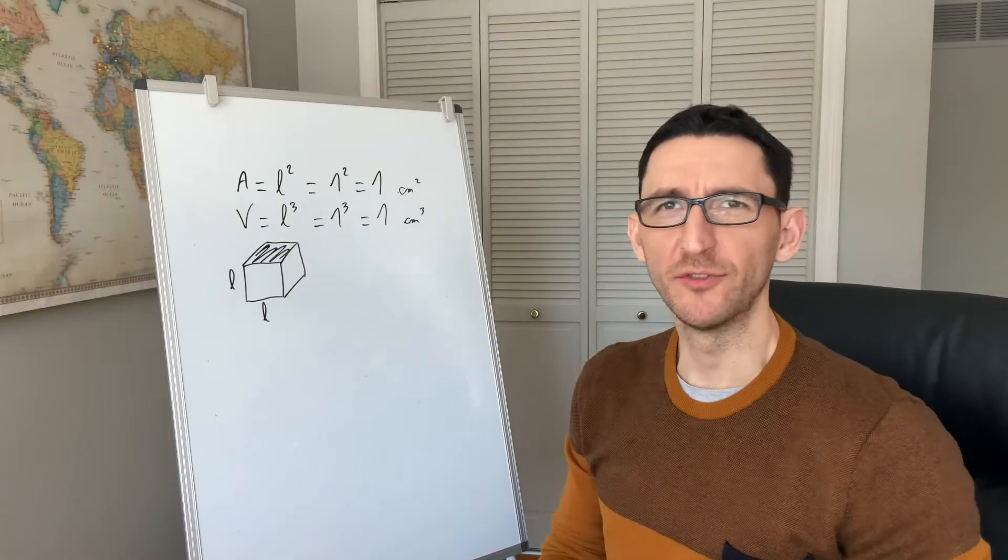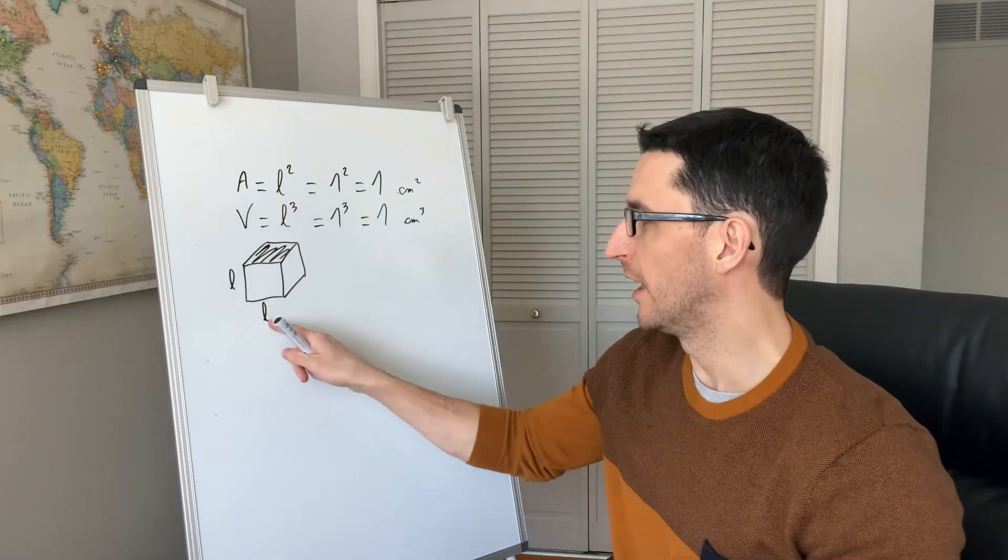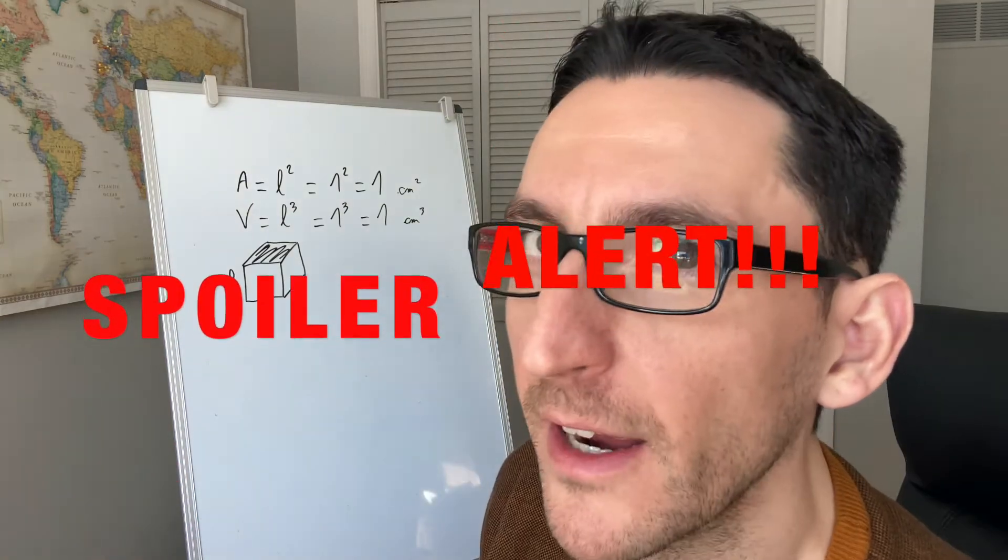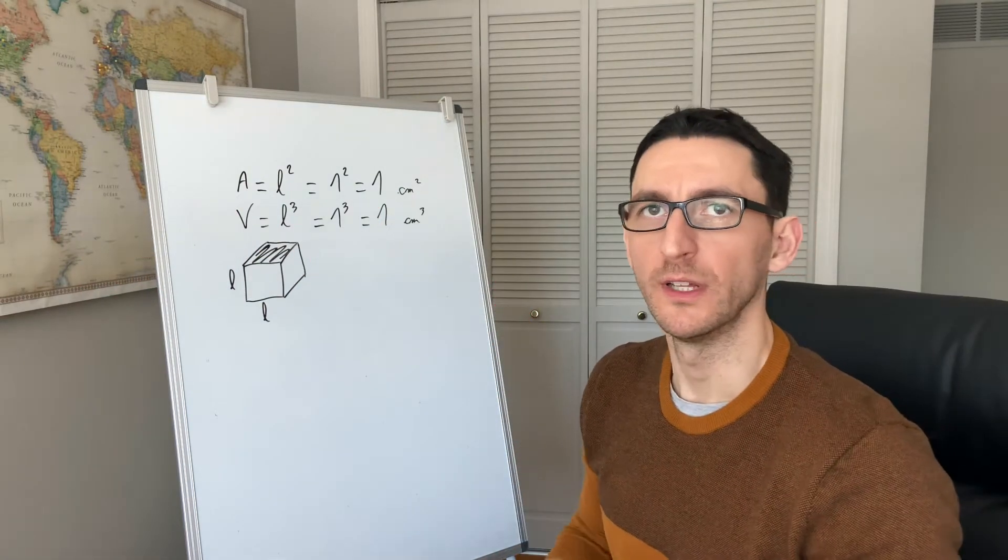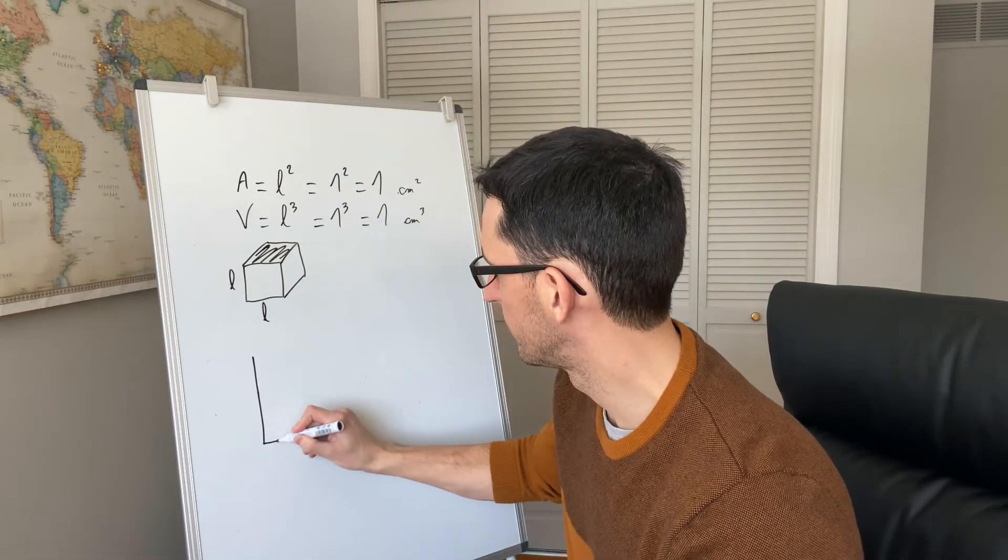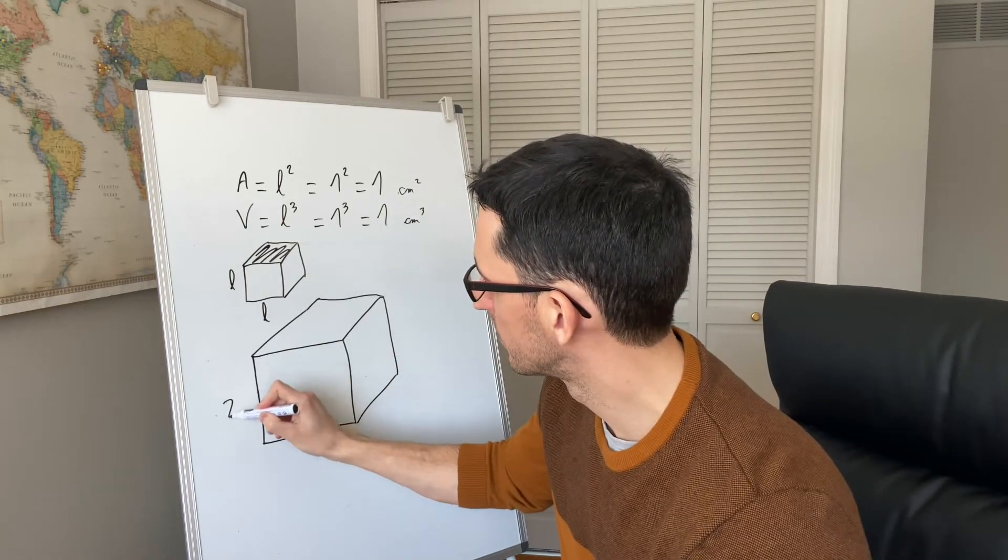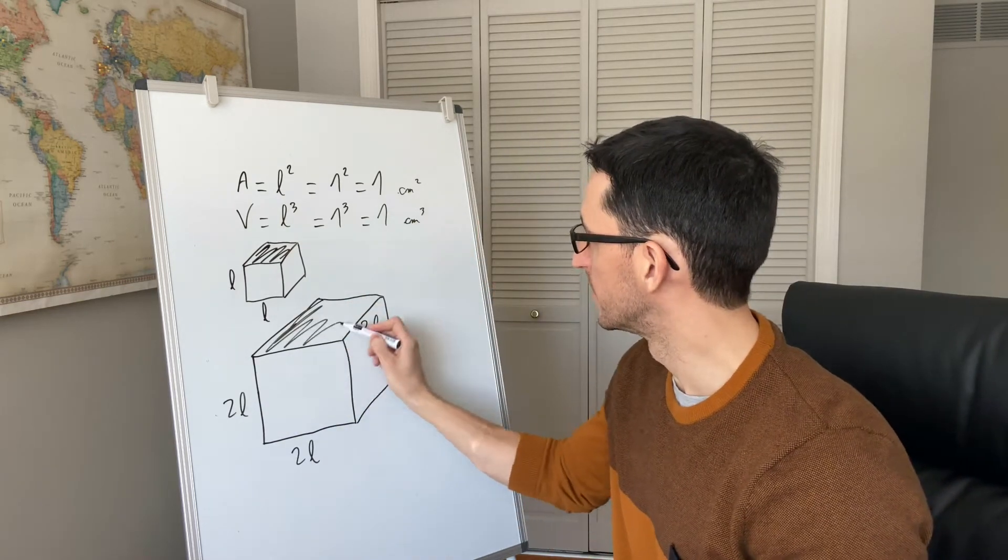Now, what would happen if we double the size of a cube? If L, the length of the cube, is multiplied by 2, the area and the volume will not be multiplied by 2. Now it's equal to 2L, and the cross-sectional area is this.